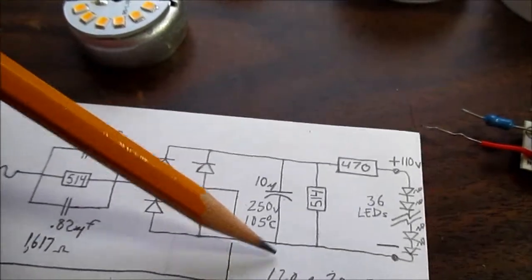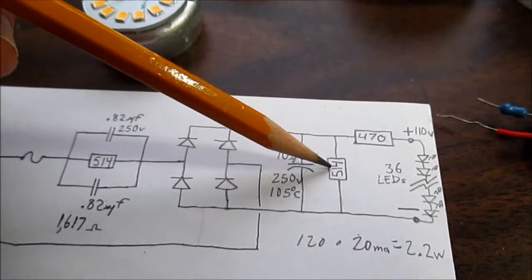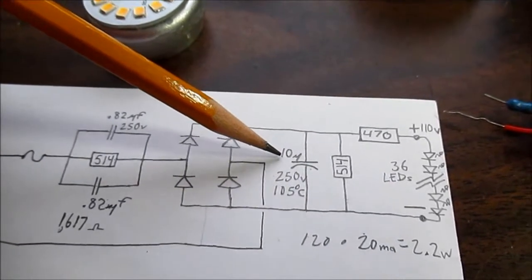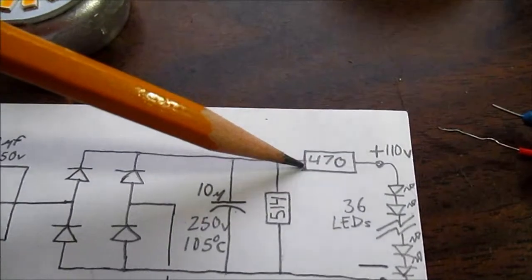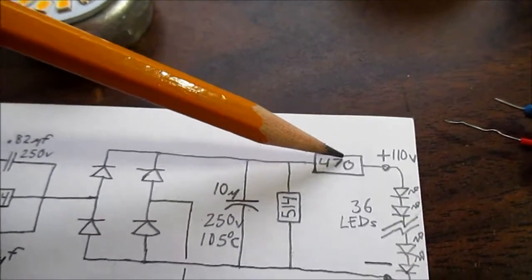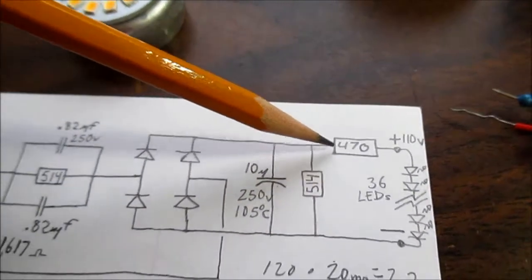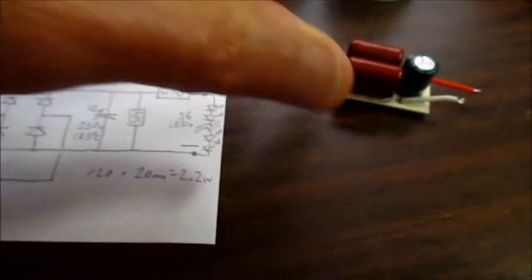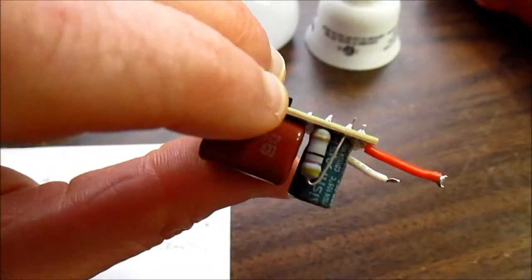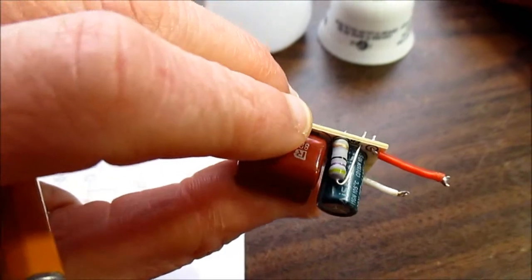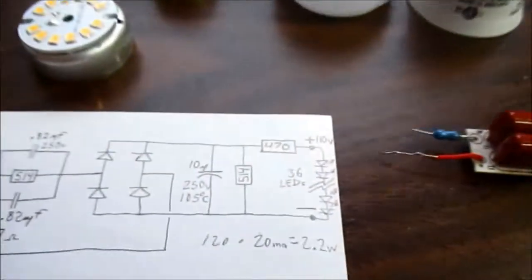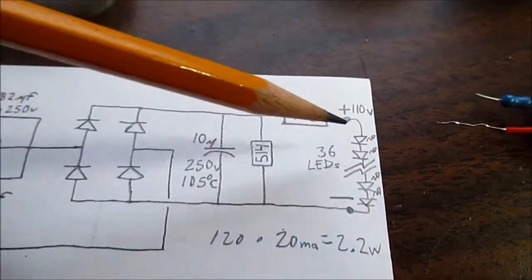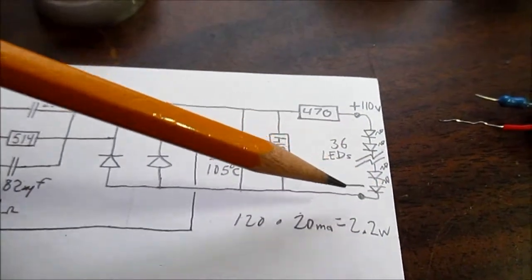Now it goes through a full wave rectifier bridge, and the rest of the circuit is pretty plain. Again, another bleed off resistor, a smoothing capacitor. And that should be 47 ohms, not 470. That's a yellow, violet, black - 47 ohm. And the LED strings connect over here.